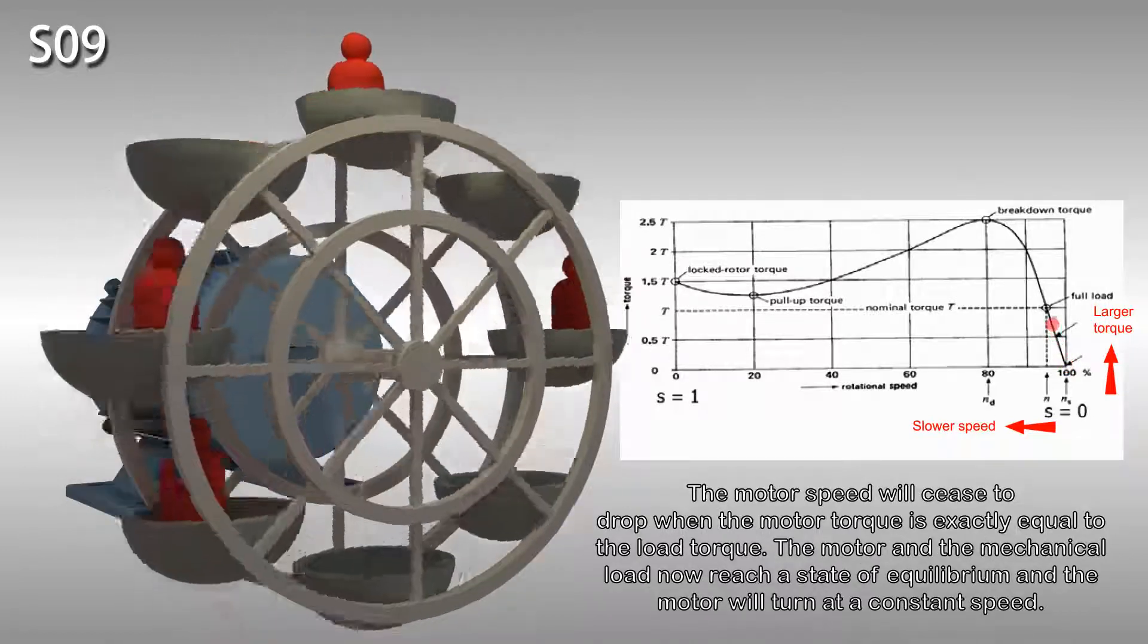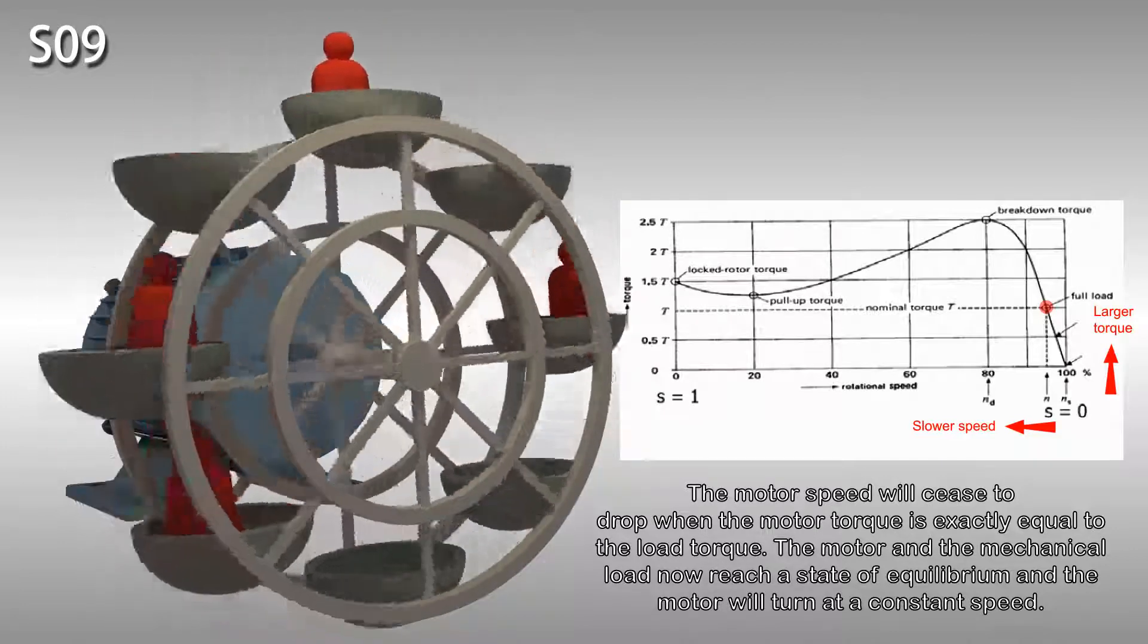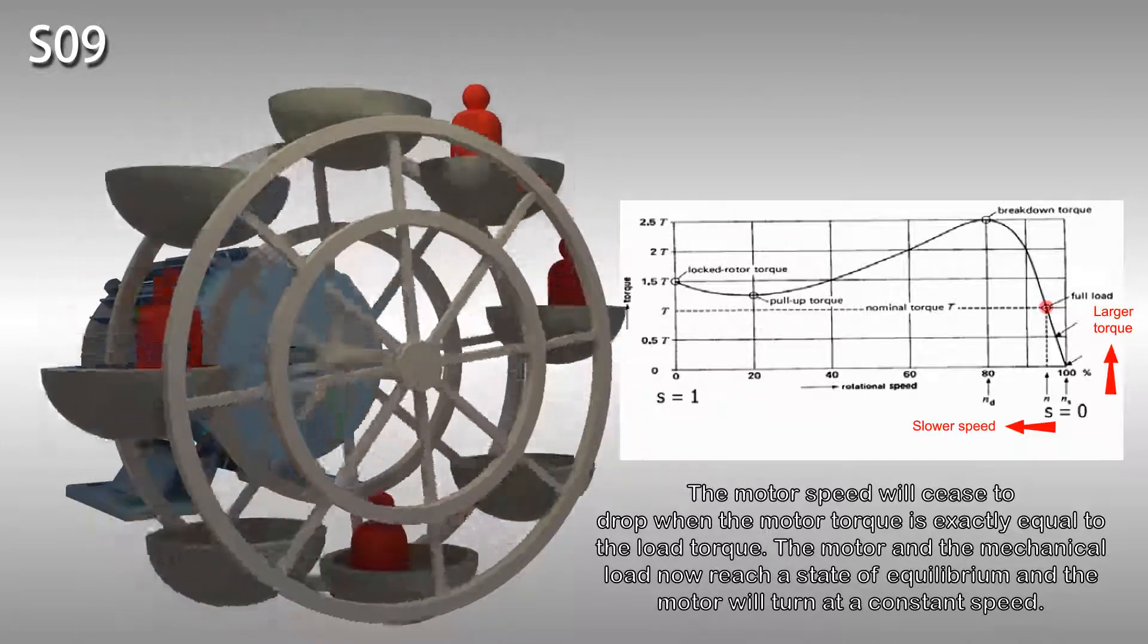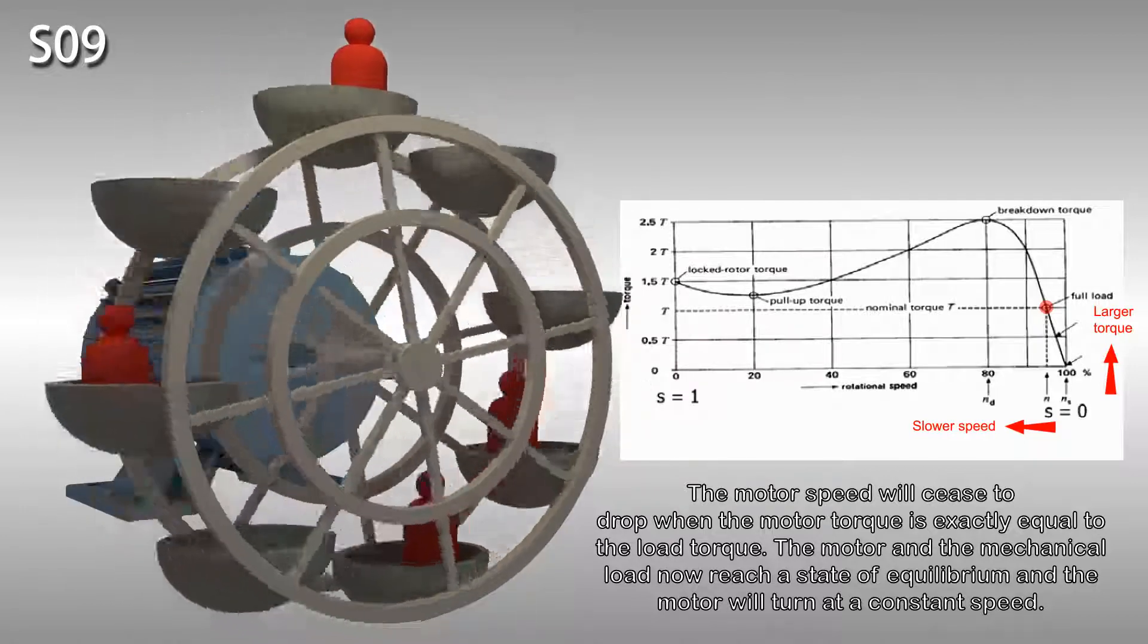The motor speed will cease to drop when the motor torque is exactly equal to the load torque. The motor and the mechanical load now reach a state of equilibrium and the motor will turn at a constant speed.